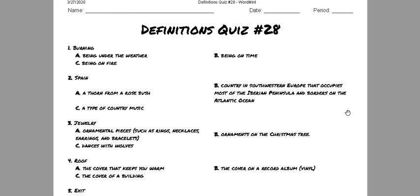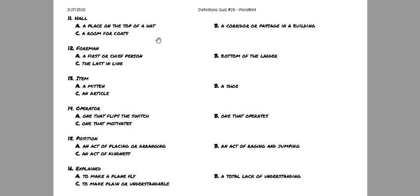Moving on down to the next page. There we go. Hall, number 11. The word is hall. Is it a place on the top of a hat? Is it B, a corridor, a passage in a building? Or C, a room for coats?